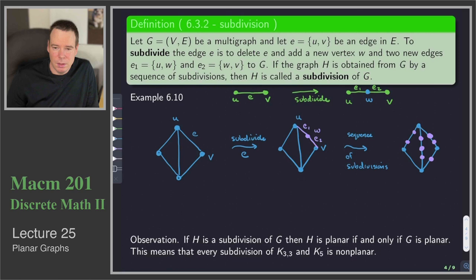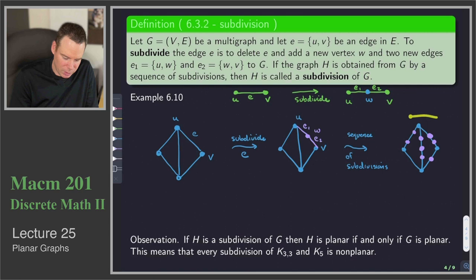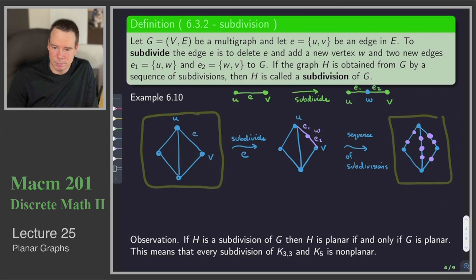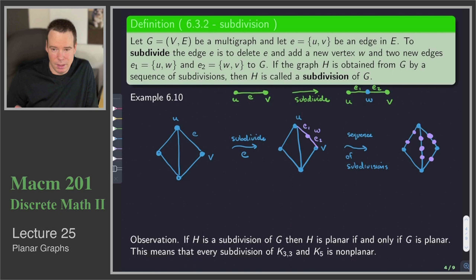The key observation is that if my original graph has a planar drawing, then my subdivision has a planar drawing, and vice versa — if my subdivision is a planar graph, then my original graph is planar. If H is a subdivision of G, then H is planar if and only if G is planar. That means every subdivision of K33 and K5 is non-planar.